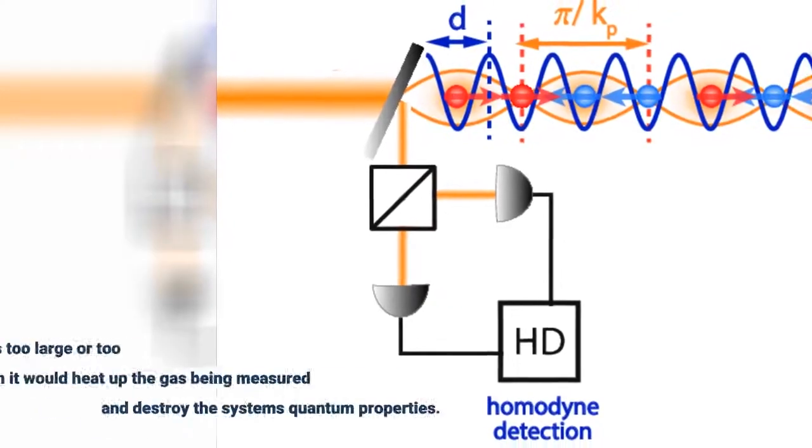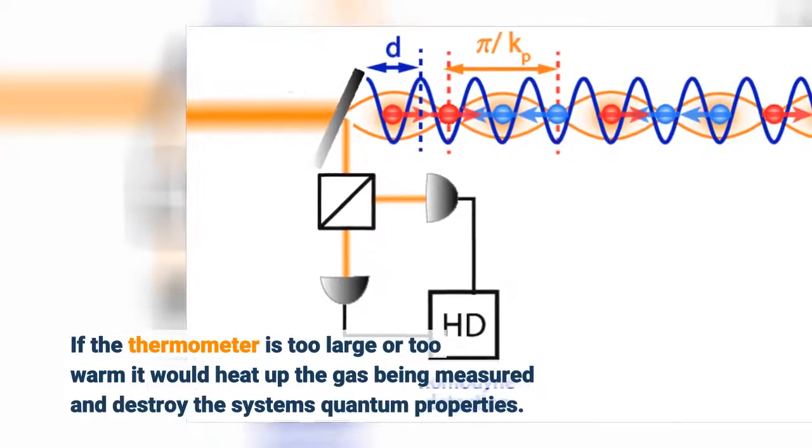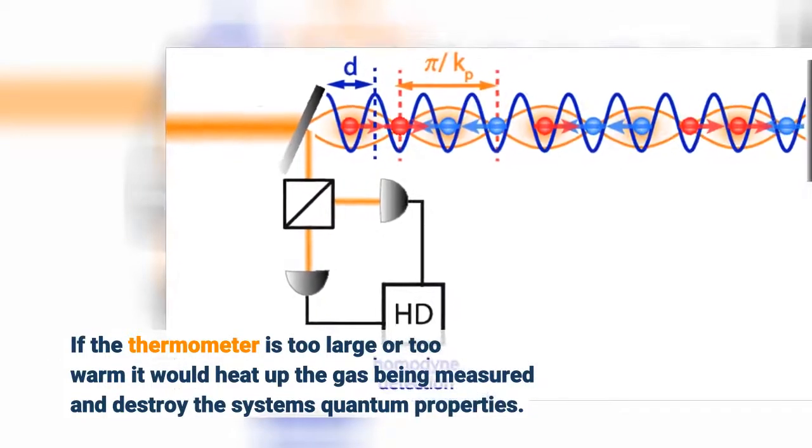If the thermometer is too large or too warm it would heat up the gas being measured and destroy the system's quantum properties.